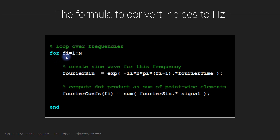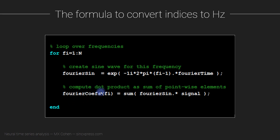That was the first component of this loop. The second part is to compute the Fourier coefficient, which is nothing more than a dot product between the complex sine wave and the signal — element-wise multiplication followed by a sum. Once we are finished with this loop, we have all the Fourier coefficients for each frequency. But for spectral and time-frequency analysis, we want to interpret these coefficients in terms of their frequency in Hertz. So how do we convert from these looping indices into units of Hertz?